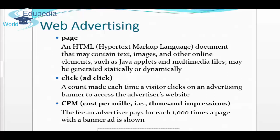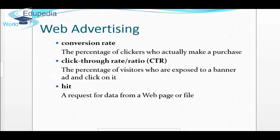CPM is the cost per mille — that is, cost per thousand impressions. It's the fee an advertiser pays for each one thousand times a page with a banner ad is shown. Then you have conversion rate: the percentage of clickers who actually make a purchase. From all the clickers who check out, those who purchase contribute to the conversion rate.